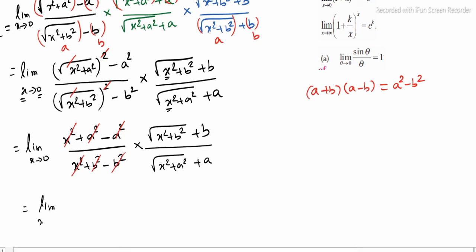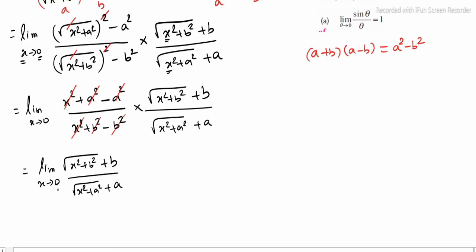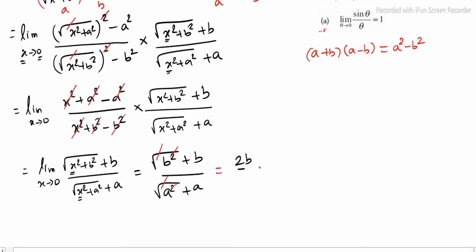Left out: limit x tends to 0 of square root of x squared plus b squared plus b, divided by square root of x squared plus a squared plus a. Now applying the limit, put 0 in place of x: 0 squared is 0, so we get square root of b squared plus b, divided by square root of a squared plus a. In the square root, square will cancel, left out we get 2b divided by 2a. The 2 and 2 will cancel, finally we get b by a. So the answer is b by a. Thank you.